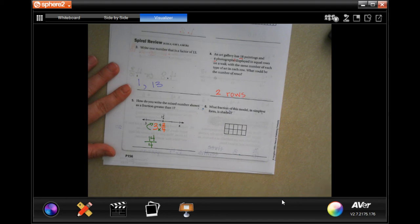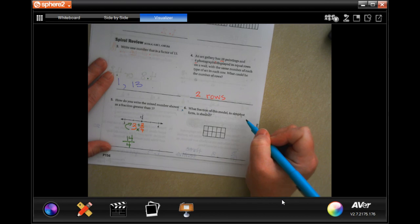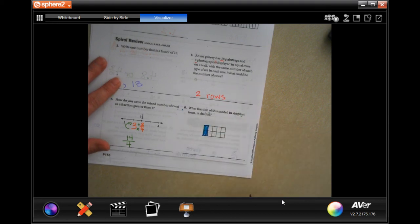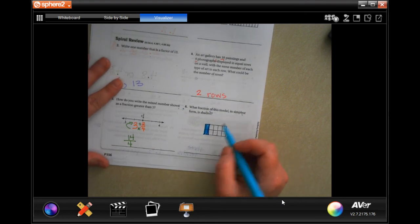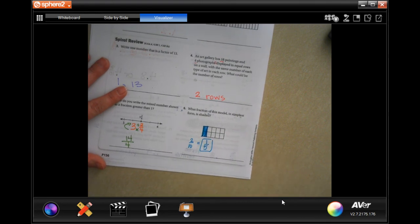What fraction of this model in simplest form is shaded? So all together there are one, two, three, four, five, six, seven, eight, nine, ten. So two tenths, but it wants it in the simplest form, which means two goes into two once and two goes into ten five times, so one fifth.